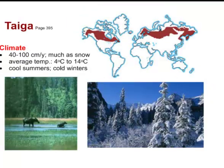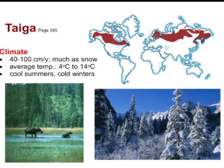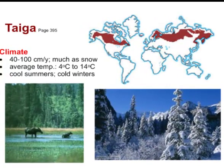The taiga, also known as the boreal forest, is the large coniferous forest found in North America and northern Asia. It gets a bit more precipitation, much of it as snow. Average temperatures are warmer than the tundra, with cool summers and cold winters. Familiar animals such as moose are typical of this biome.